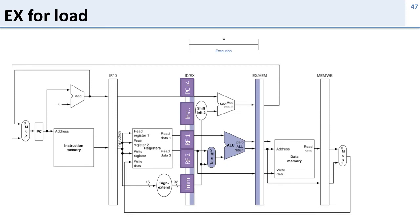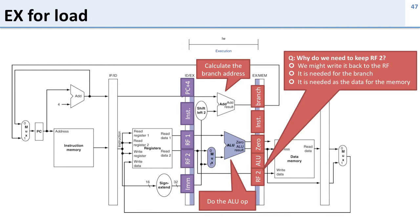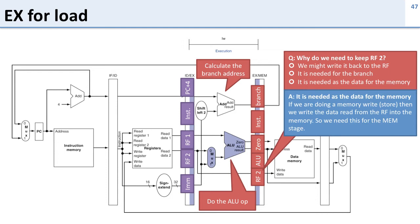Now here's the execute stage. We're going to do two things: calculate the branch address and do the ALU op. The branch address is calculated using PC plus 4 and the immediate, and the ALU op is calculated using the reads from the register file and/or the immediate value. What do we store as the result? We keep the instruction, drop PC plus 4, keep the branch address, the ALU results, whether the ALU is zero, and the results of RF2 — which is needed as the data for memory writes if it's a store instruction.